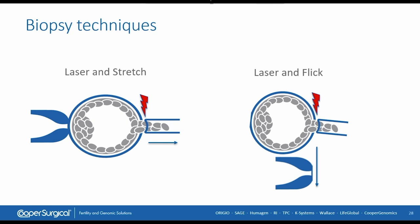There are two biopsy techniques in use globally. The first is laser and stretch: you aspirate the cells you want to biopsy, start pulling on those cells, and you laser — by stretching, pulling, and lasering, you remove those cells. The second technique is laser and flick: you aspirate the cells, remove the embryo from the holding pipette, laser one to three maximum shots, then pull down this border of cells against the holding pipette, and in this way the biopsied cells are removed.